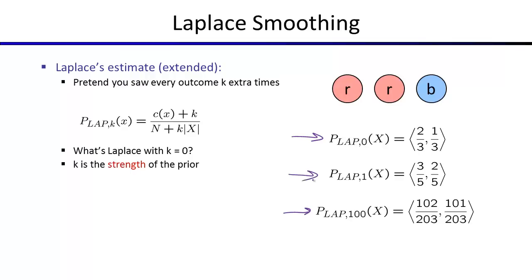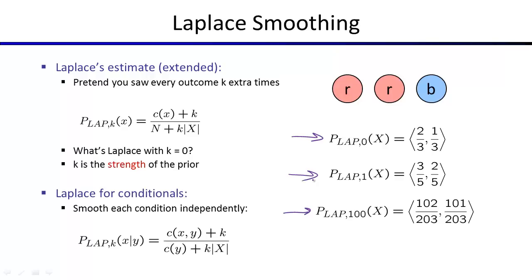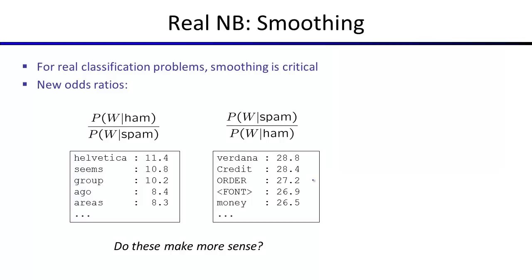There's going to be a sweet spot somewhere in between. This introduces an important distinction: most parameters — like the probability of the word 'free' given spam, or pixel 73 being on given digit 7 — are trained from training data. But the smoothing amount k is what's called a hyperparameter, and you can't set it on your training data. Once you apply reasonable smoothing, the most indicative words are no longer rare words like 'screens' but words that occur frequently with a skewed distribution.